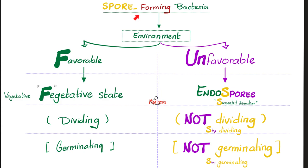Here's a gram-positive bacteria capable of making spores. We'll look at the surrounding environment. Favorable? It'll be in the vegetative state, therefore dividing — i.e., germinating. But under unfavorable circumstances, it'll make an endospore. Will it divide? Nope, it's not dividing anymore in the spore. We call this suspended animation — not dividing, not germinating.